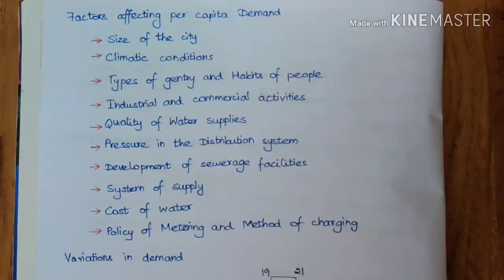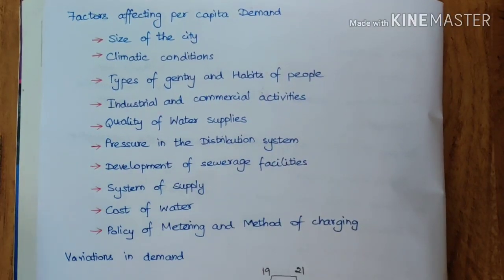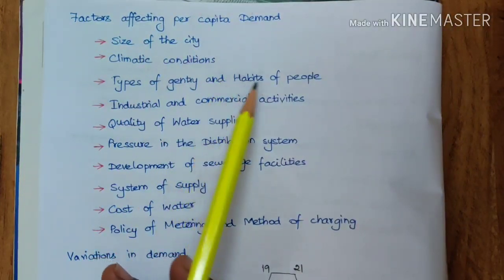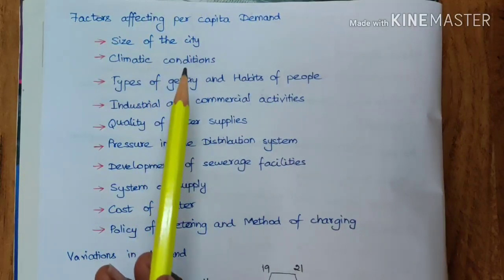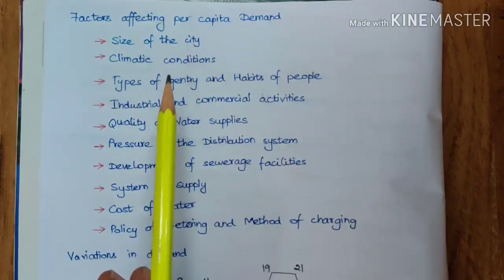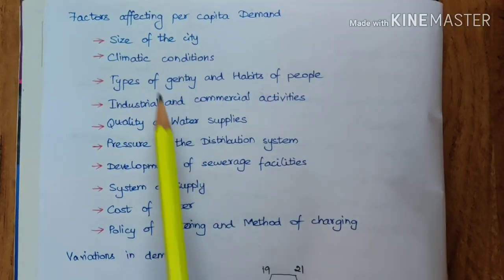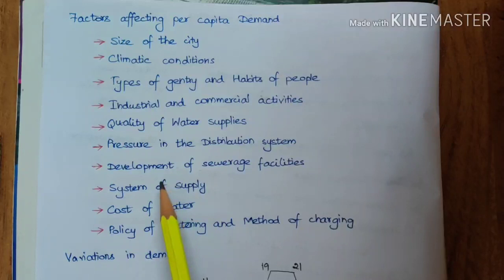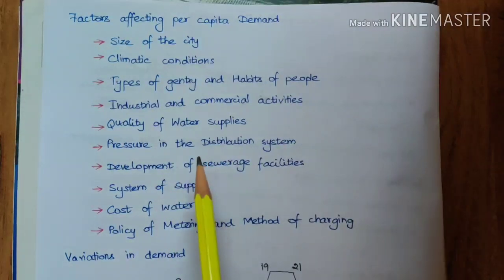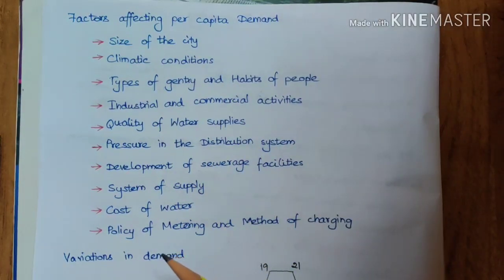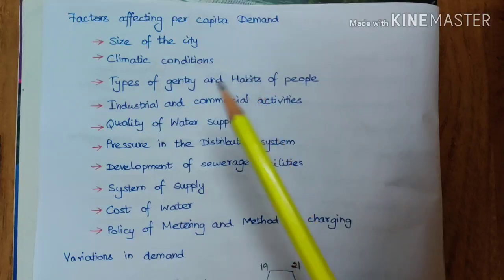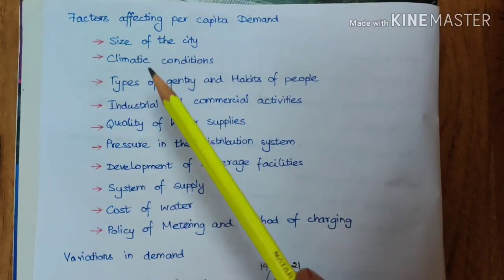Today we are going to see the factors affecting per capita demand. In the last class we already saw the types of demand. This topic is not very important for exams but may be asked as objective questions, such as which of the following factors is not affecting the per capita demand, so it is better to be aware of these topics.